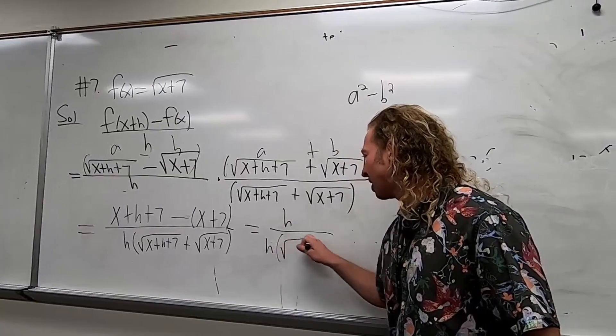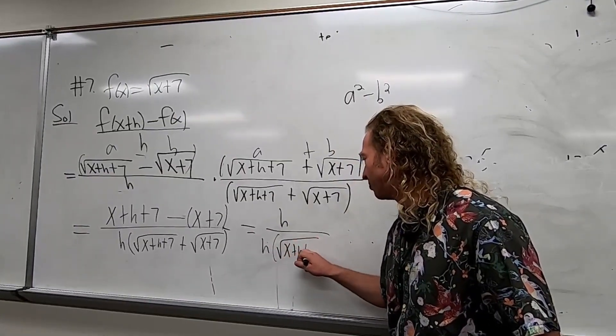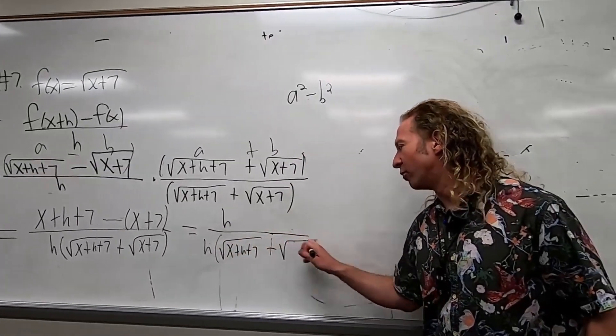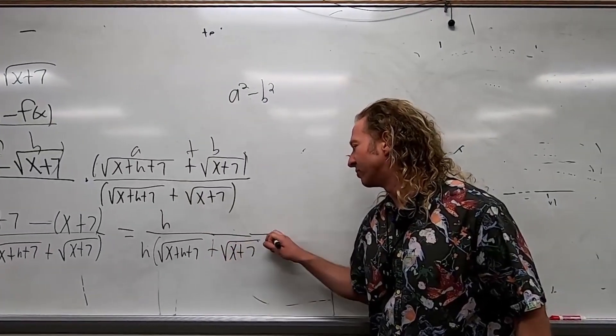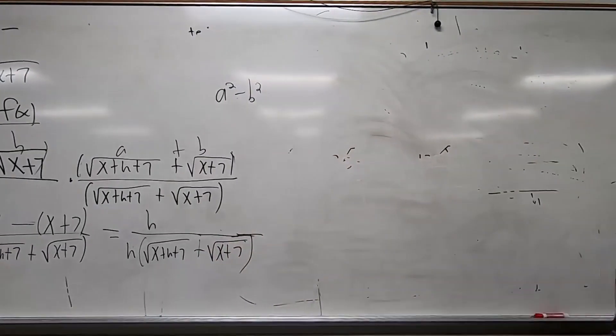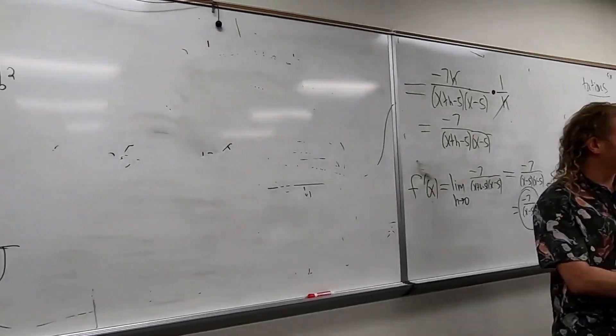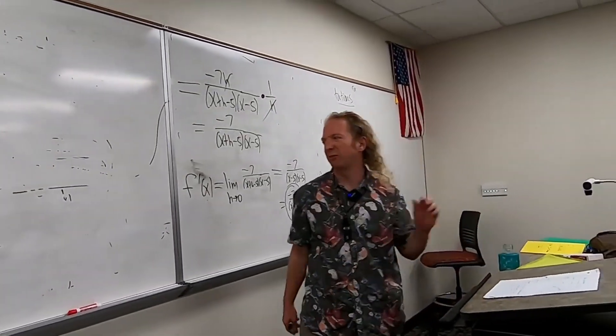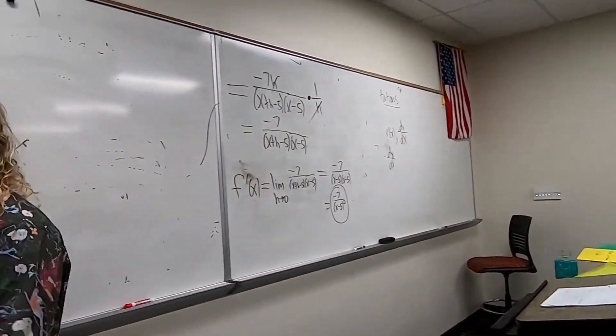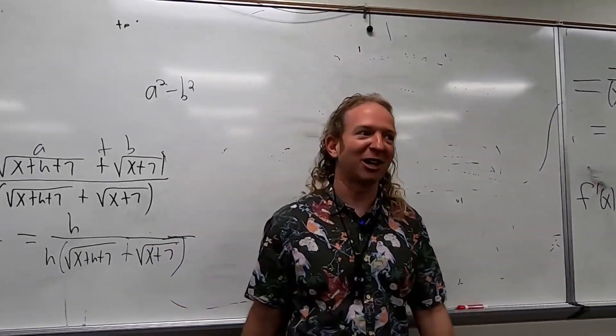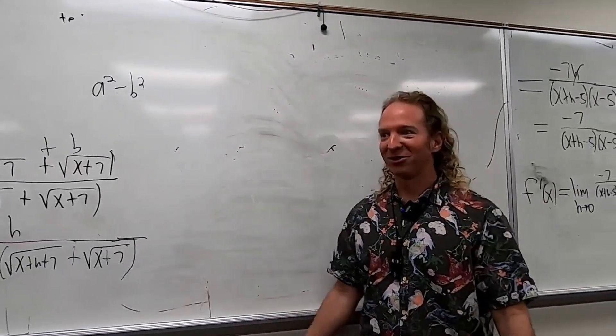I won't skip too many steps. We get h over the quantity times square root x plus 7 plus square root x plus 7. It's good mathematics. We didn't lose too much time with the fire drill—well, maybe we did, but it's okay. Could have been a real fire.